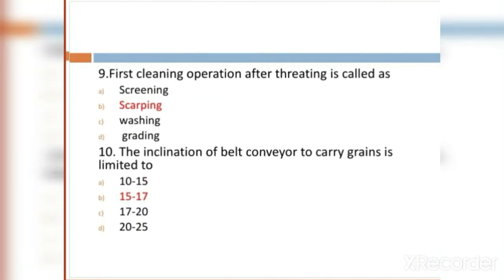MCQ 9: The first cleaning operation after threshing is called as: Option A: screening. Option B: scrapping. Option C: washing. Option D: grinding. The right answer is scrapping.